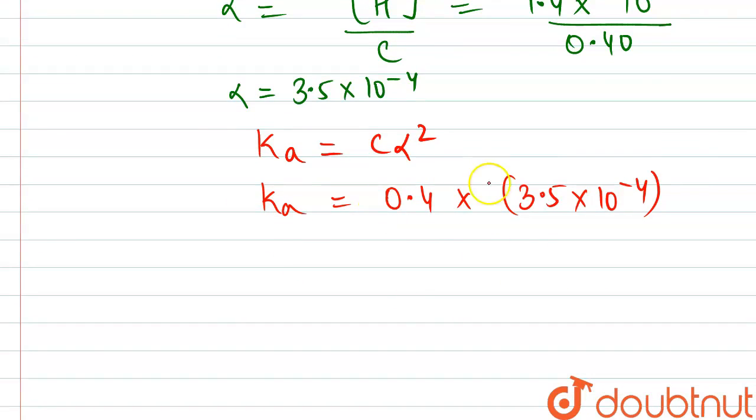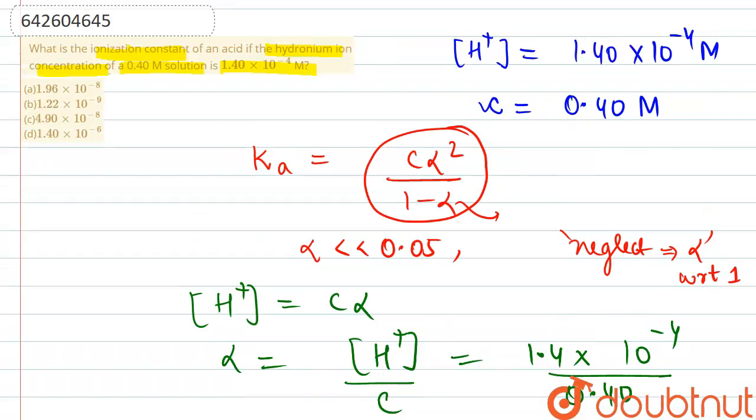On solving, the value of Ka from here we will be getting is 4.9 × 10^-8. This is the ionization constant that we were supposed to find out.